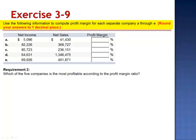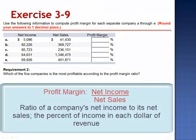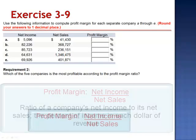Exercise 9. Use the following information to compute the profit margin for each separate company A through E, rounding the answers to one decimal place. The profit margin is the ratio of net income to net sales. It represents the portion of each dollar of revenue that the company is able to generate in net income.